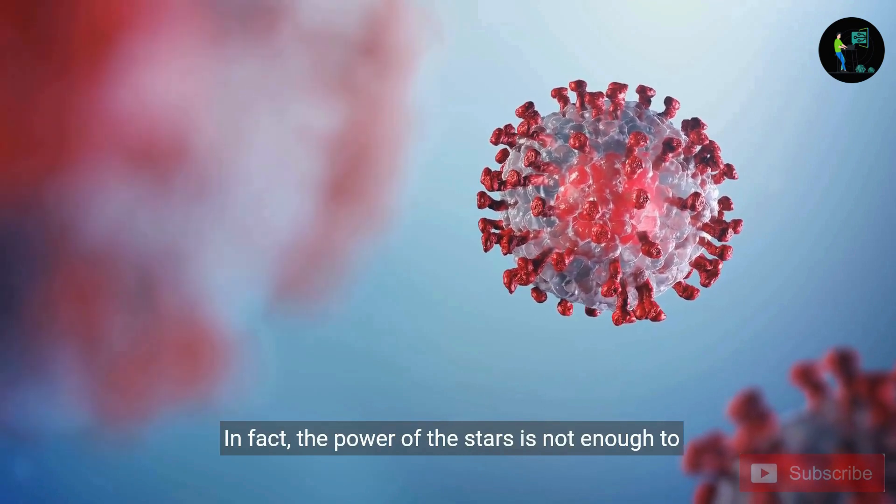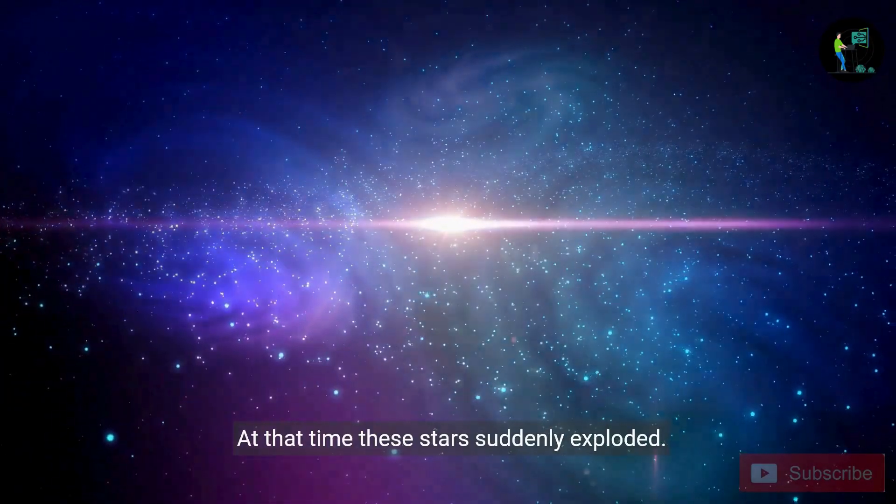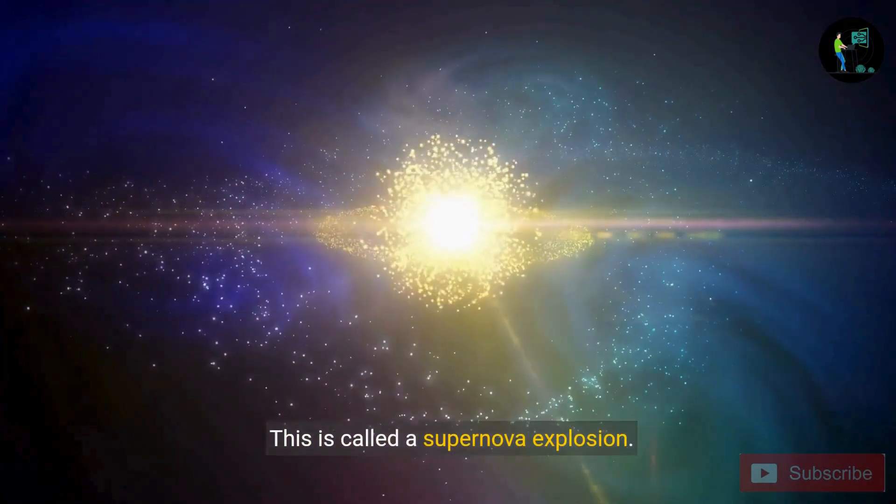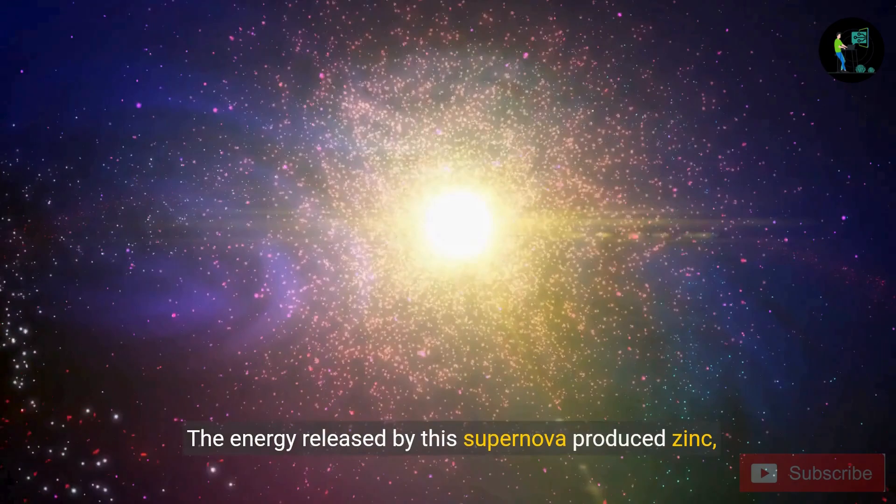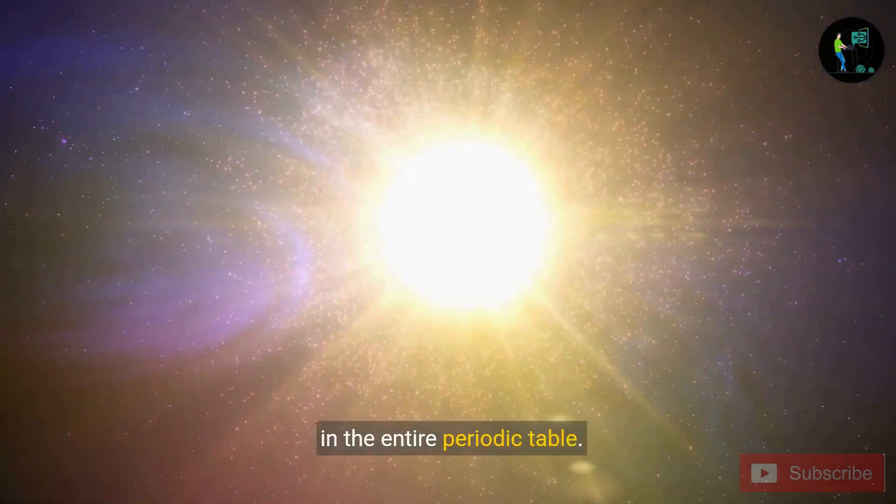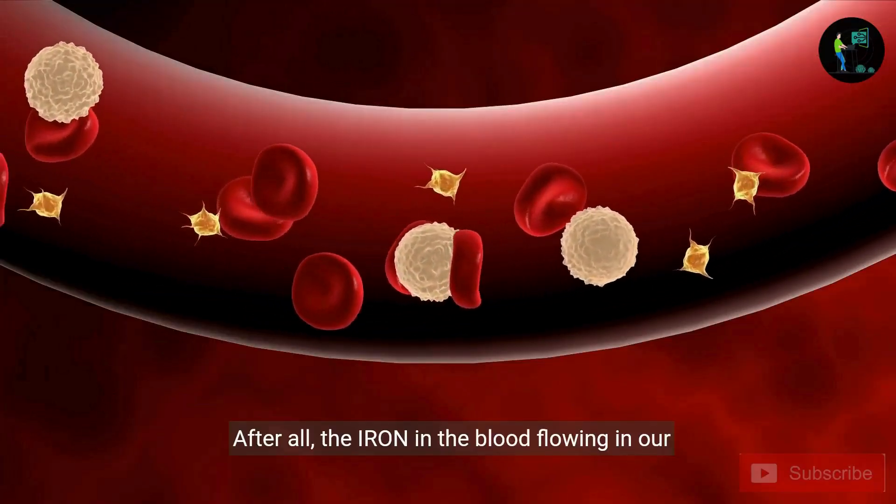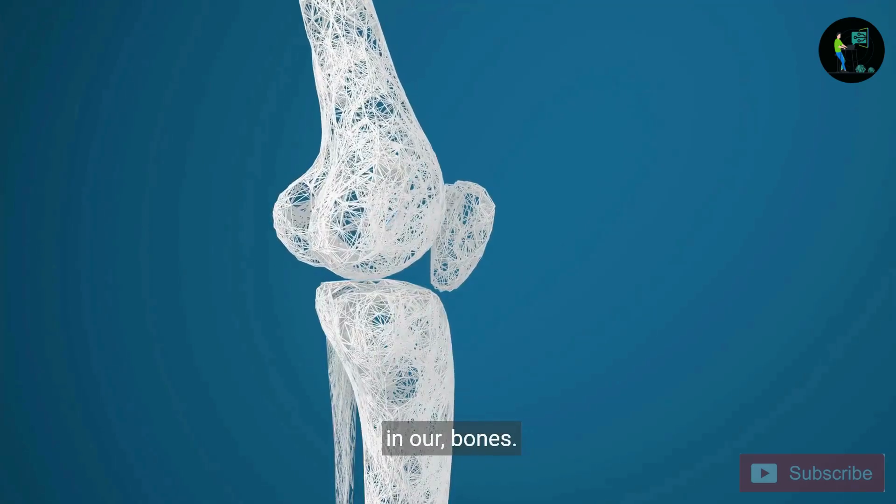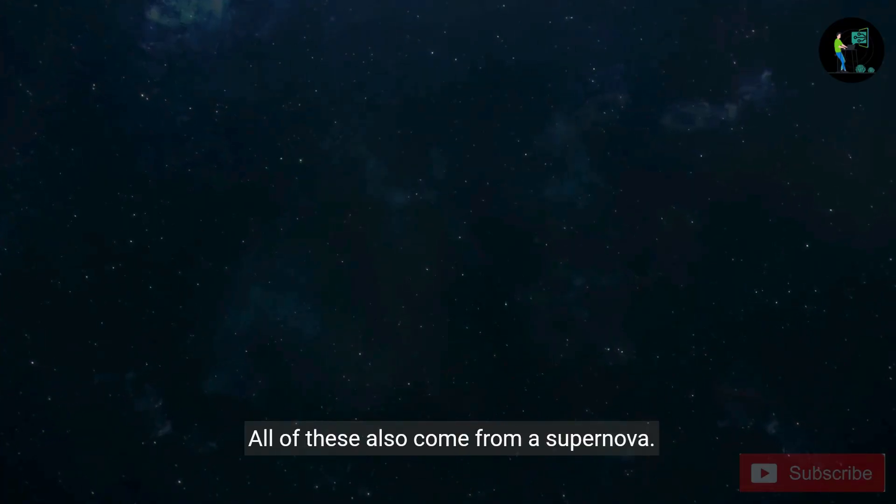In fact, the power of the stars is not enough to make them. At that time, these stars suddenly exploded. This is called a supernova explosion. The energy released by this supernova produced zinc, gold, and platinum. All the elements are also made in the entire periodic table. After all, the iron in the blood flowing in our body, the calcium in our bones, the oxygen that we breathe daily, all of these also come from a supernova.